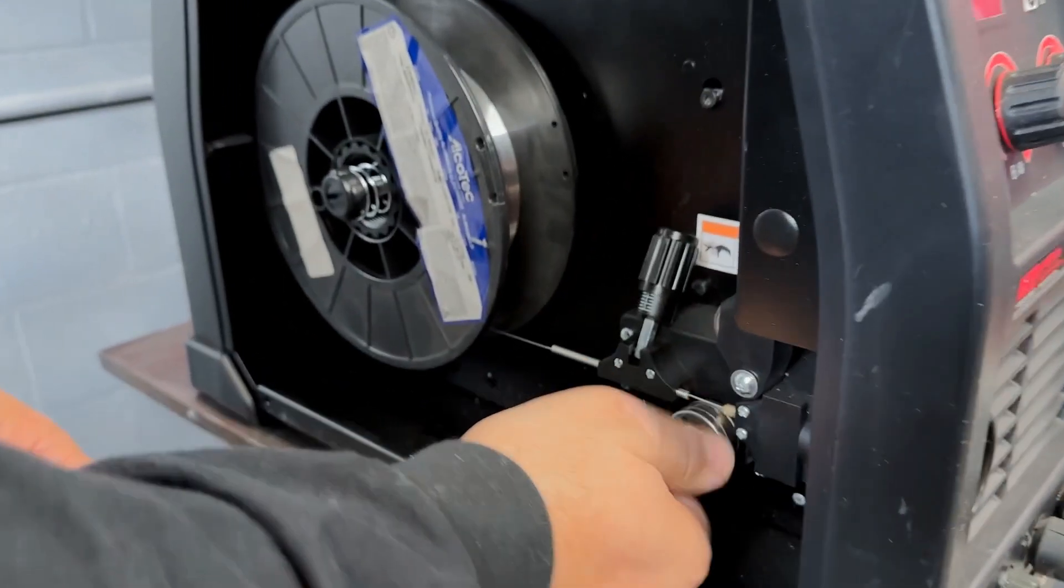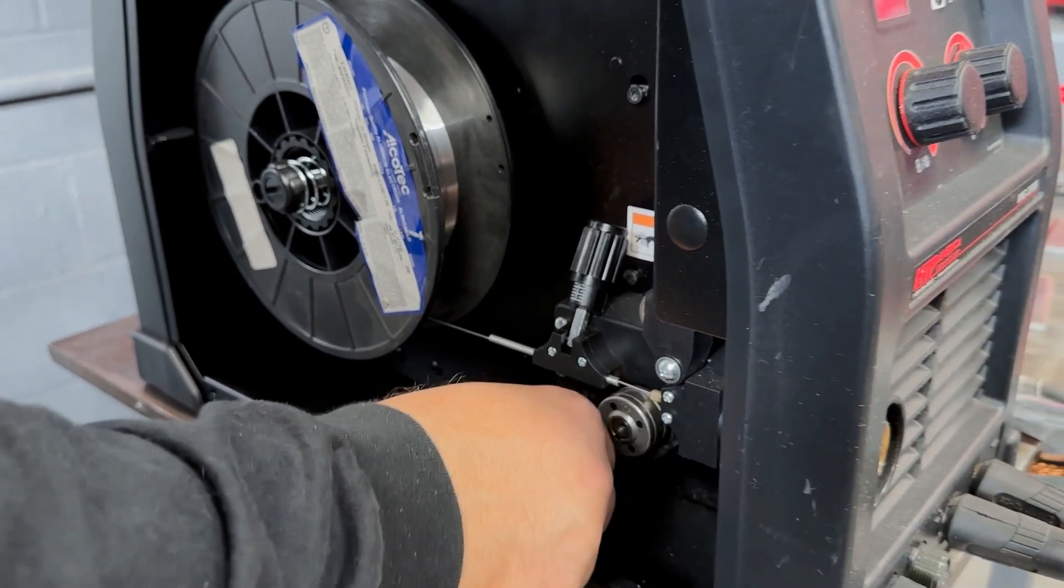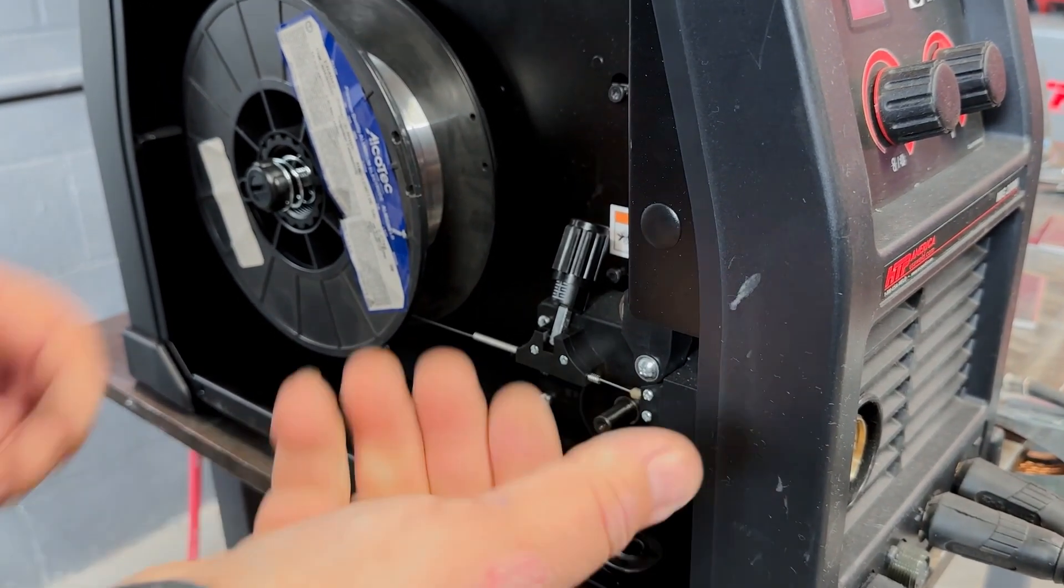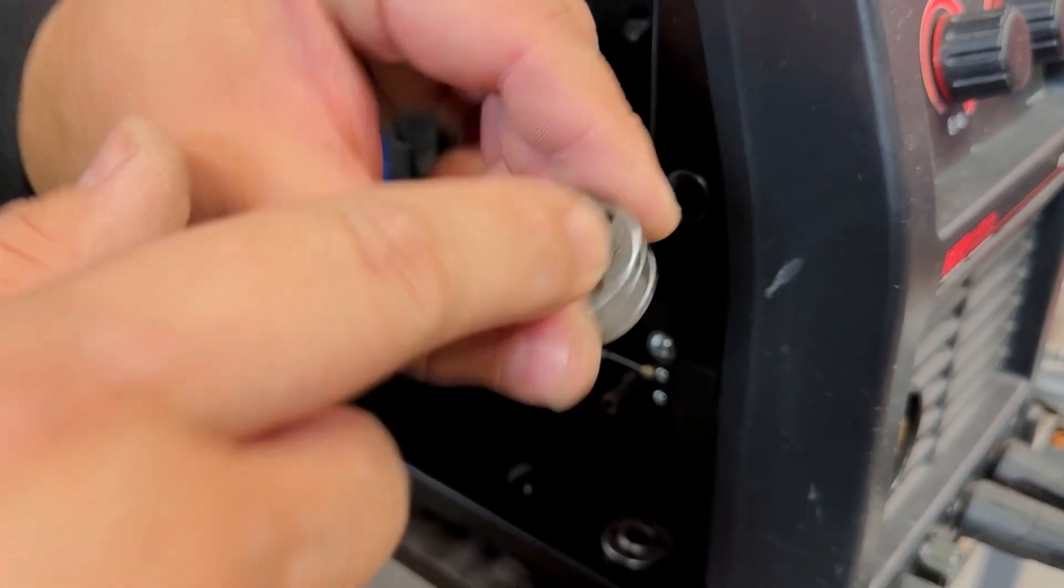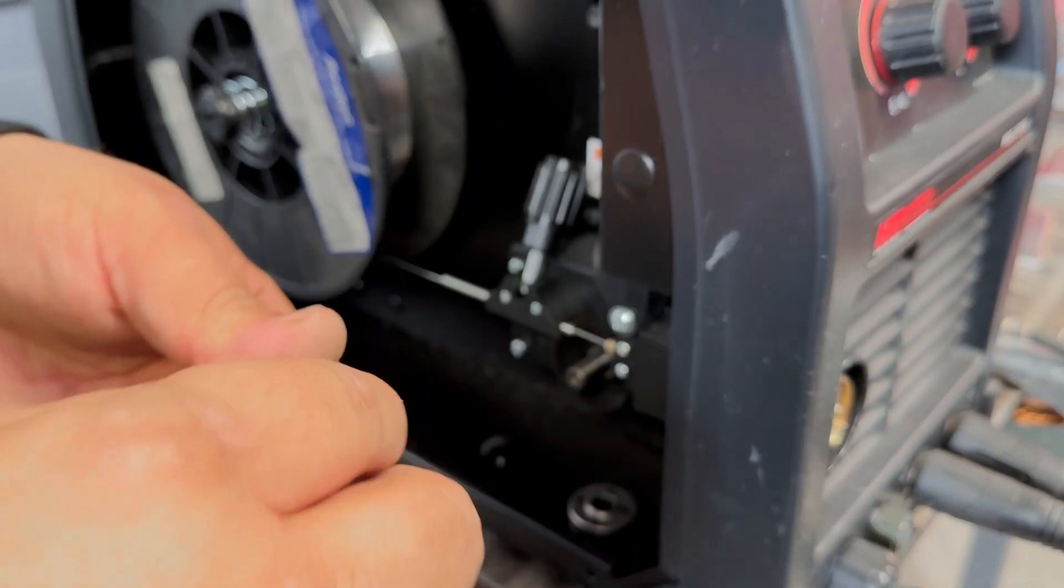Then remove your steel drive roll. Replace with your aluminum drive roll. Use this side for 364, use that side facing you for 035.